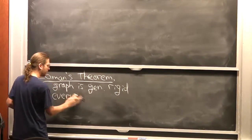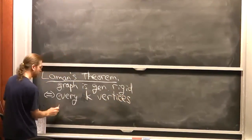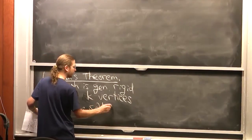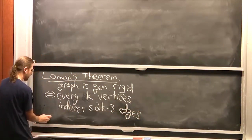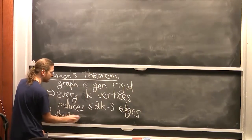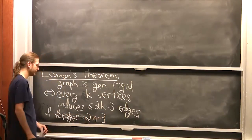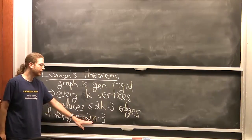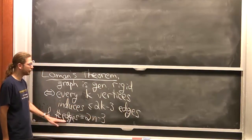Remember Laman's characterization: your graph is generically rigid if and only if every k vertices induce at most 2k minus 3 edges, and the total number of edges in the graph is 2n minus 3, where n is the total number of vertices. This is the degree of freedom count — you have 2n degrees of freedom per vertex, minus 3 for rigid motions (2 translations, 1 rotation). This applies to minimally generically rigid graphs.